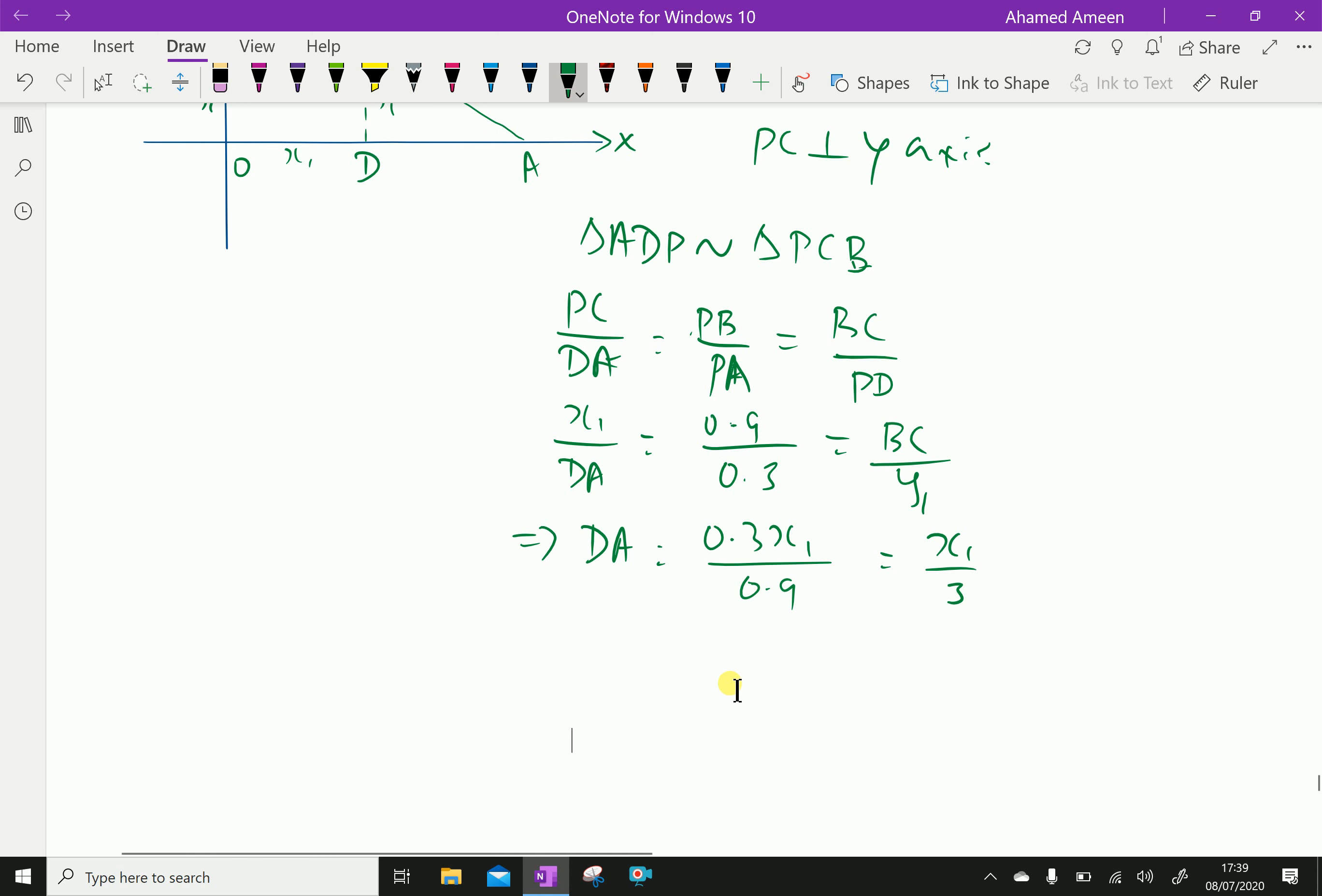Now, DA we got it, and BC is equal 0.9y₁ over 0.3, which is equal 3y₁. BC is 3y₁.